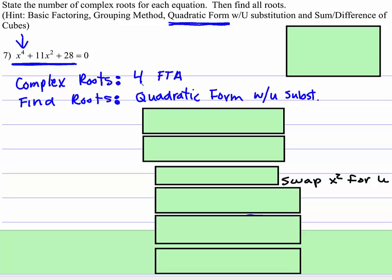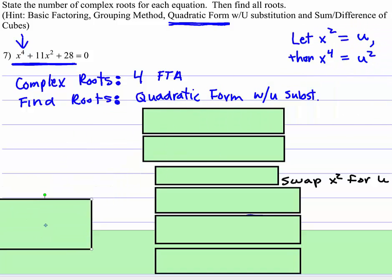So for the u substitution, this is what we do. We let this x squared right there equal to u. Then x to the fourth will just equal u squared. Because look at u squared times u squared is x to the... would be u to the fourth, right? Or x squared times x squared is u to the fourth. u times u would be u squared.